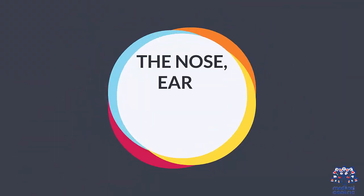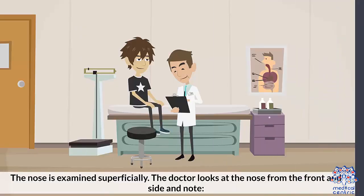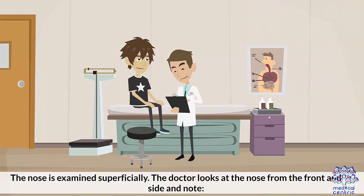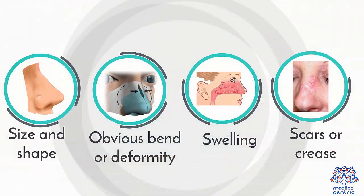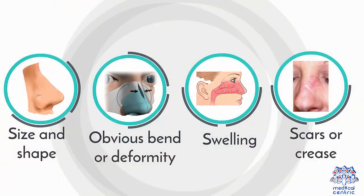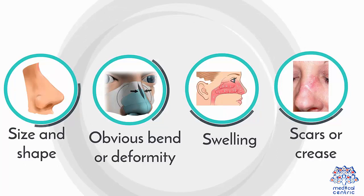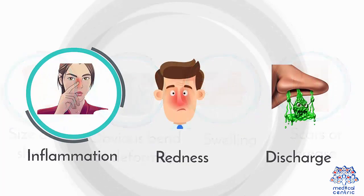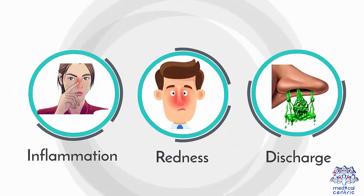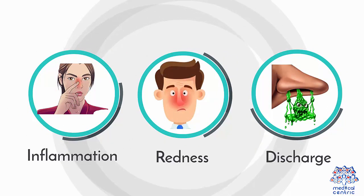The nose, ears, mouth, and throat are also examined. The nose is examined superficially. The doctor looks at the nose from the front and side and notes size and shape, obvious bend or deformity, swelling, scars or creases, inflammation, the position of the septum and the presence of polyps, and redness.